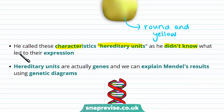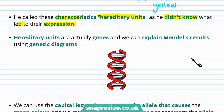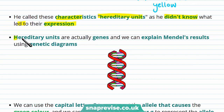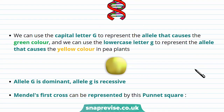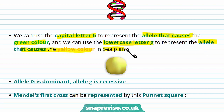Mendel called them hereditary units because he didn't know what led to their expression — he basically didn't know what caused them to be either round, yellow, green, etc. However, now we know that hereditary units are actually genes and we can explain Mendel's results using genetic diagrams. For instance, we can use the capital letter G to represent the allele that causes the green colour, and the lowercase letter g to represent the allele that causes the yellow colour in pea plants.